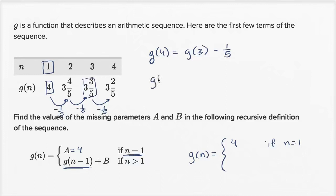I could have written this like g(4) equals g(4-1) minus 1/5. So when you look at it this way, if I'm trying to find the nth term, it's going to be the (n-1)th term plus negative 1/5. So b is negative 1/5.